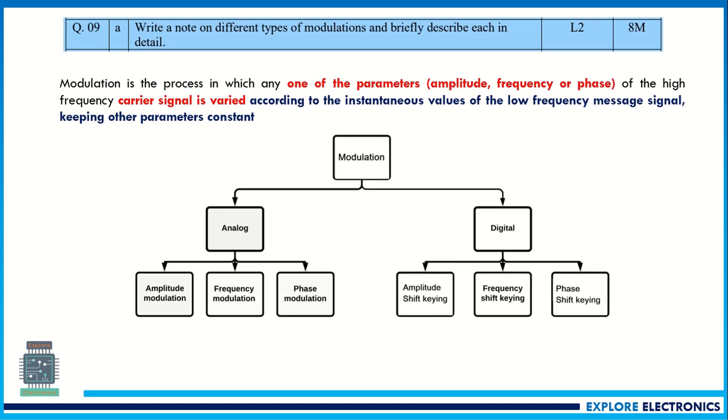Later you can write the different types of modulation schemes. If you come to the analog part: amplitude modulation, frequency modulation, and phase modulation. If you come to the digital part: amplitude shift keying, frequency shift keying, and phase shift keying. This is the answer for half of the question.